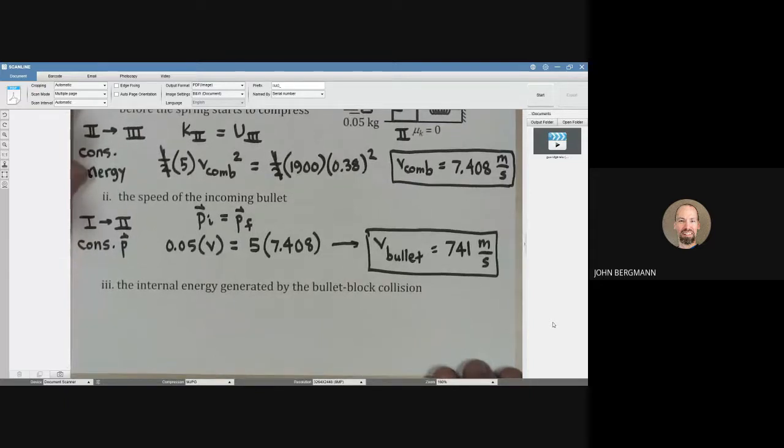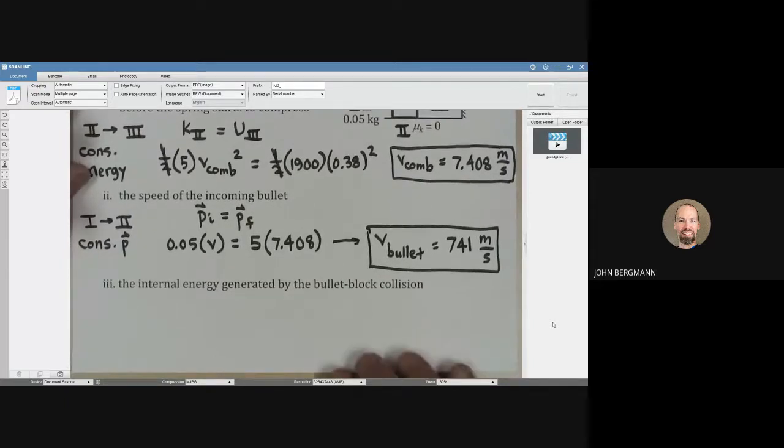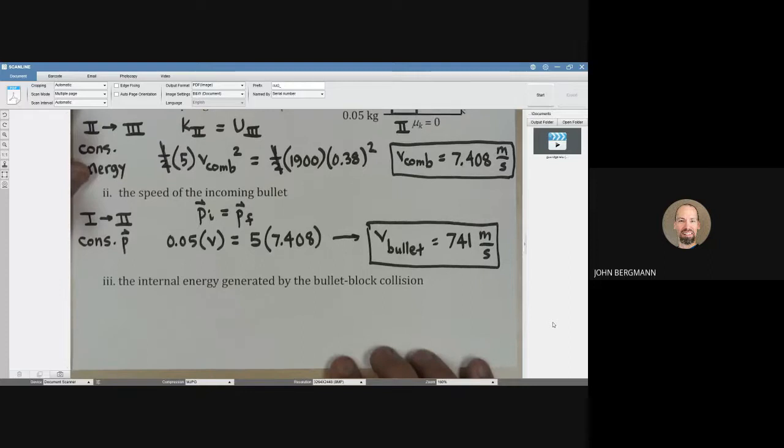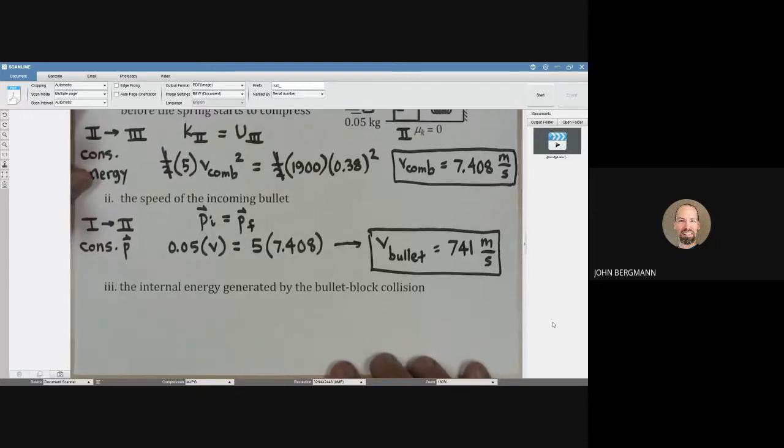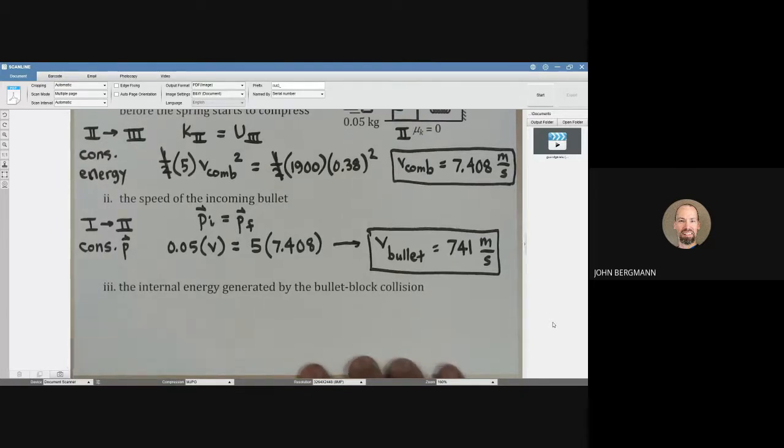Now, how much internal energy, how much thermal energy was generated by the collision? This is a perfectly inelastic collision. The bullet slams into the block and then they stick together. So definitely there is some internal energy or thermal energy or heat or any number of ways you want to describe that generated. How much is generated?